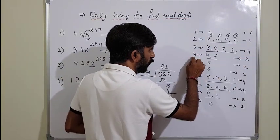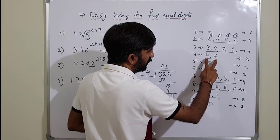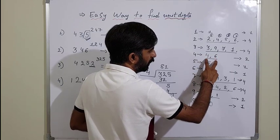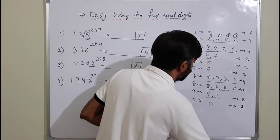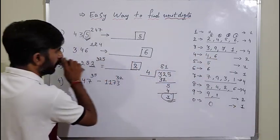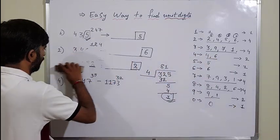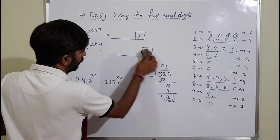So to summarize: if your last digit is 2, 3, or 7, divide the power by 4. If your last digit is 4 or 9, divide by 2. Let me give you a few more examples to help clarify.